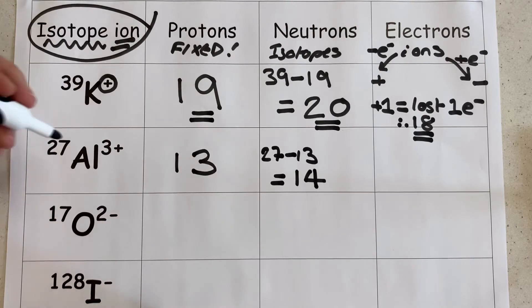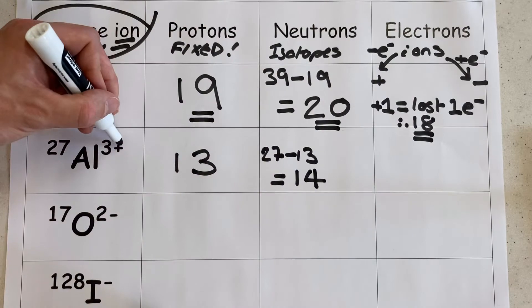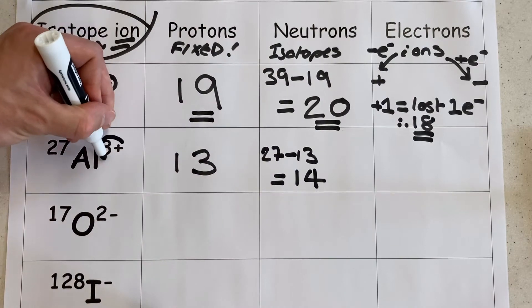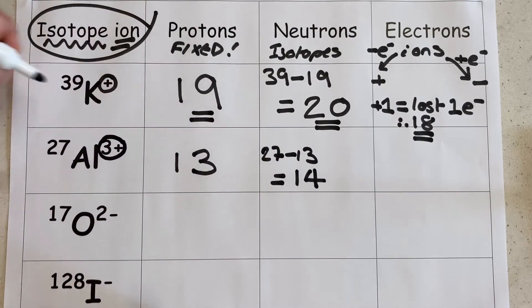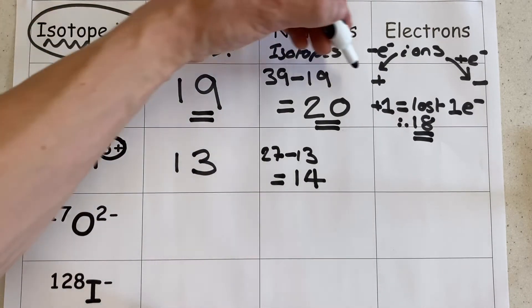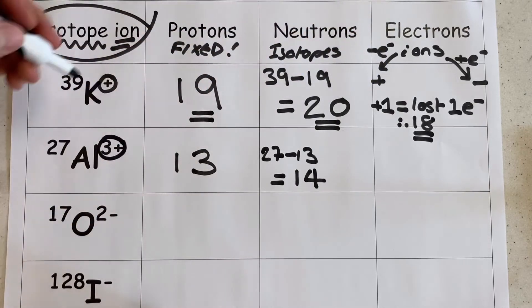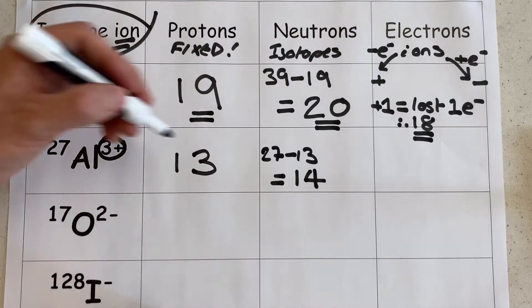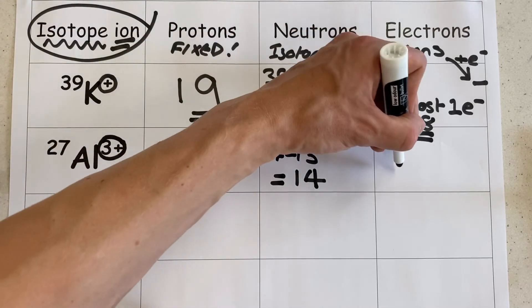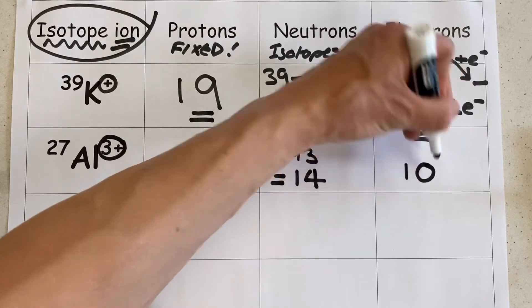But what about the number of electrons? Well, if it was neutral, it would be 13, but it's not — it's 3+. And positive ions have lost electrons. So that tells me my number of electrons in this case is just going to be 10.